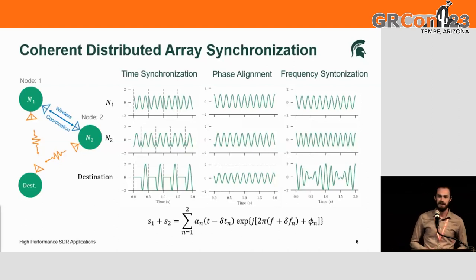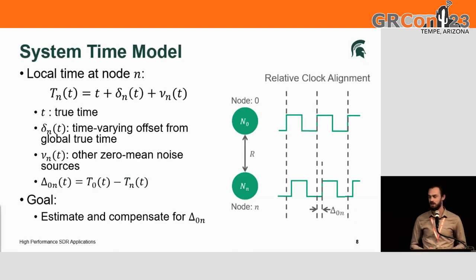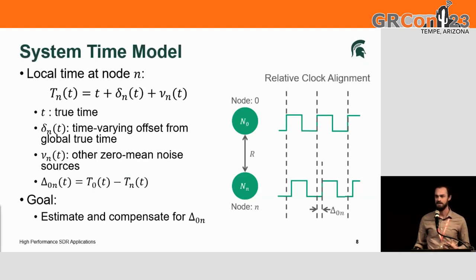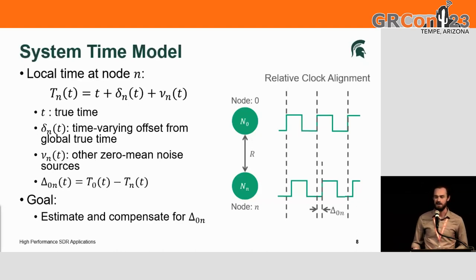We'll also go over an adjunct frequency synchronization circuit used in conjunction with timing to perform fully wireless operations. For the synchronization technique, you can model the time at each antenna node — in this case software-defined radios — as a function of global true time t, plus some time-varying offset delta sub n of t at each node n, and a zero-mean noise term. Our goal is to estimate the time offset at any node relative to an arbitrary primary node, node zero, in order to compensate for it.